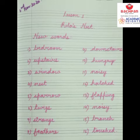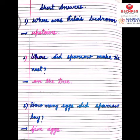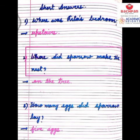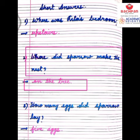Dear students, please read them and write them in your copy. Let's start with the short answers. Where was Rita's bedroom? The answer is upstairs — U-P-S-T-A-I-R-S, upstairs. Next question: where did the sparrow make the nest? The answer is on the tree. The sparrow made its nest on the tree.